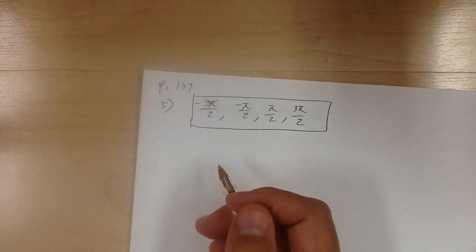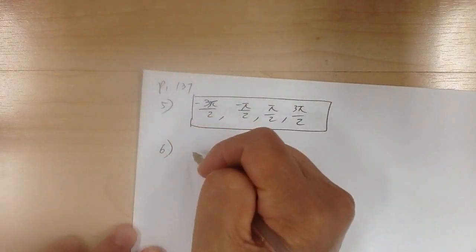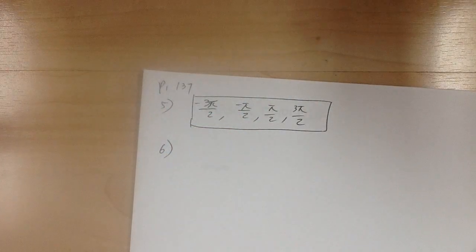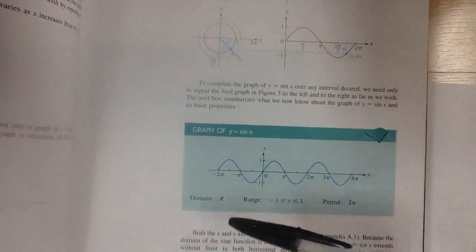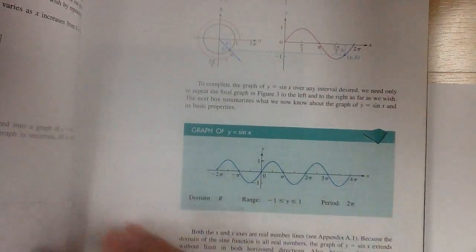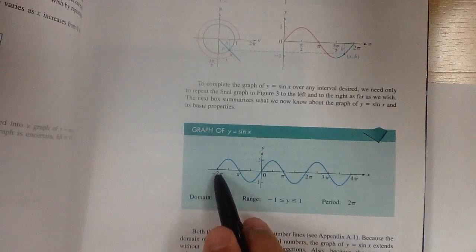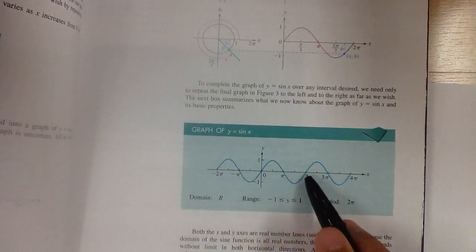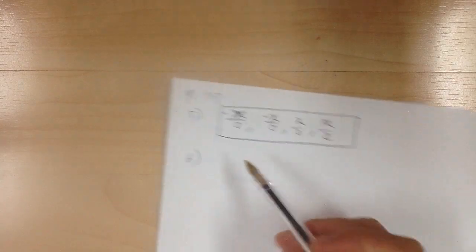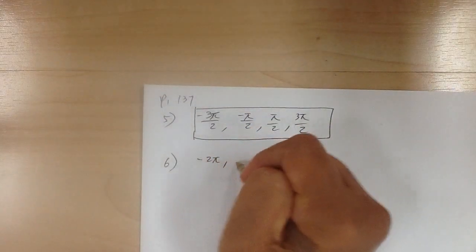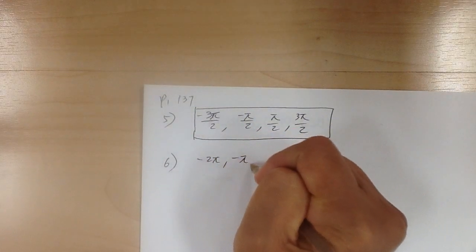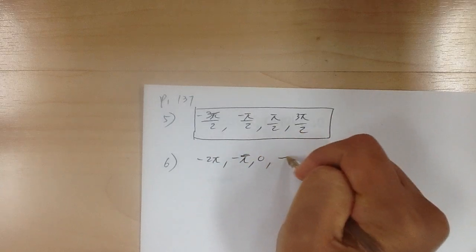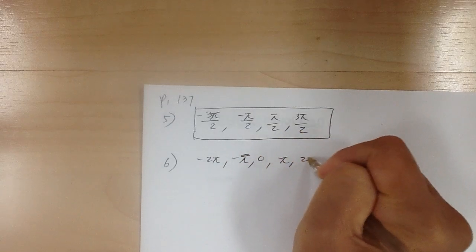For number 6, for the sine function, looking at where it crosses over, the x-intercepts are negative 2pi, negative pi, 0, pi, and 2pi.